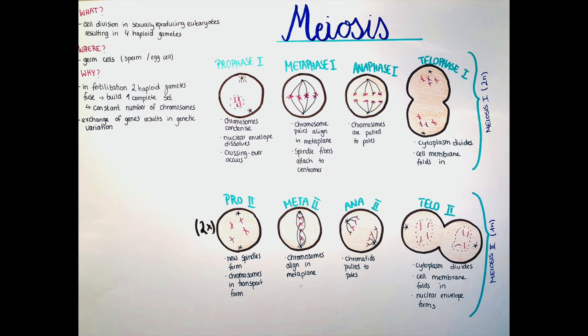So now the chromatids are pulled to the different poles in anaphase II. So now the set is halved, and then in the telophase II, the cytoplasm again divides, the cell membrane folds in, and the nuclear envelope forms again. So now we have four new cells, each with a haploid set, so a half set of the genetic information.